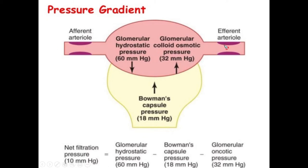In this diagram you can see the afferent arteriole and the efferent arteriole. Here we have different pressures. One pressure is known as hydrostatic pressure — 'hydro' means water, 'static' means stationary water. Suppose you have a glass of water: there is barometric pressure at the top, and in the bottom the column of water exerts its own pressure, so we have more pressure at the bottom.